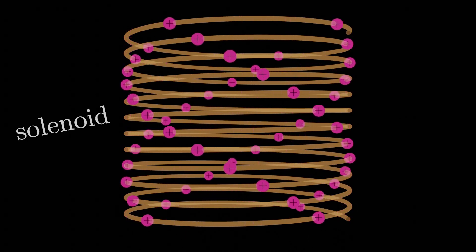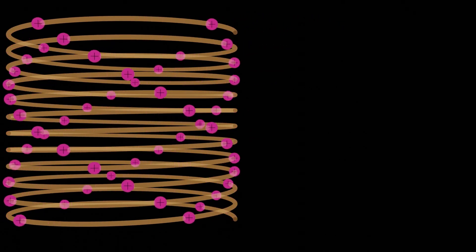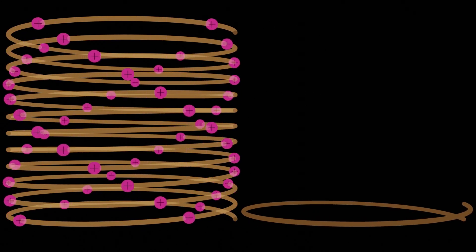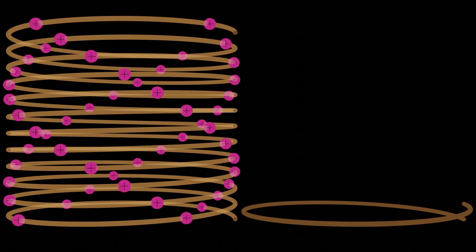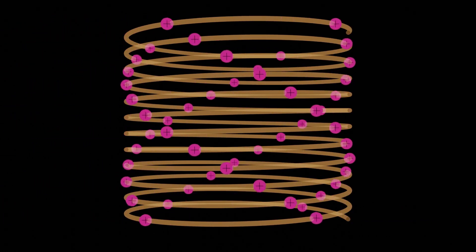In practice, even though each loop is technically ever so slightly slanted, this solenoid here behaves almost exactly like our collection of stacked loops from before. So we can just about treat our solenoid here as if it is exactly that, just a collection of stacked current loops. Now why would we want to do that?